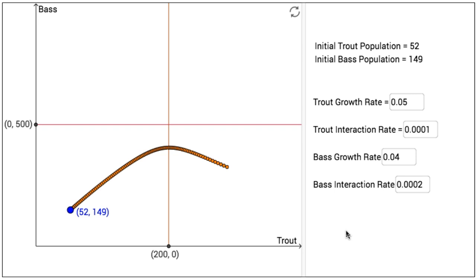On the right side of the interactive figure, the initial trout population is given as 52, and the initial bass population is given as 149. And by clicking on the point on the left side of the window and dragging that point, we can always change the initial populations of both species.